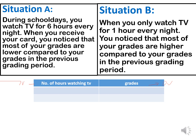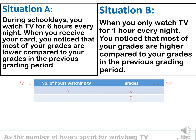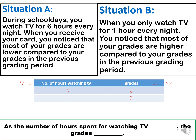Notice that in the first situation, when you watch TV for 6 hours, most of your grades went down. And when you decrease it to 1, most of your grades went up. With this, we can say that as the number of hours spent watching TV increases, the grades decrease, and vice versa. Notice that the direction of the two variables is opposite, so we say that the relationship of the two variables is indirect.